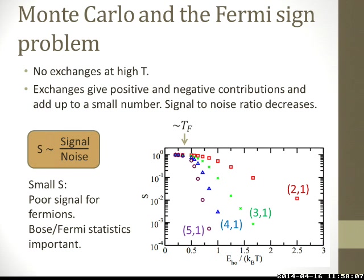Mapping the signal-to-noise ratio S as a function of inverse temperature — as the x-axis increases, temperature decreases — here are different system configurations: two spin-up and one spin-down up to five spin-up and one spin-down. For all these systems, the signal-to-noise ratio decreases after lowering the temperature, and as we add more particles, the noise increases.